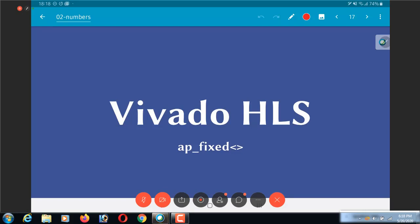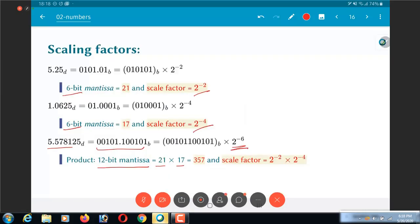So what we have over here are effectively something called fixed point numbers. Why do I call it fixed point? Because I have chosen the convention that the scaling factor is either 2 power minus 2 or 2 power minus 4.